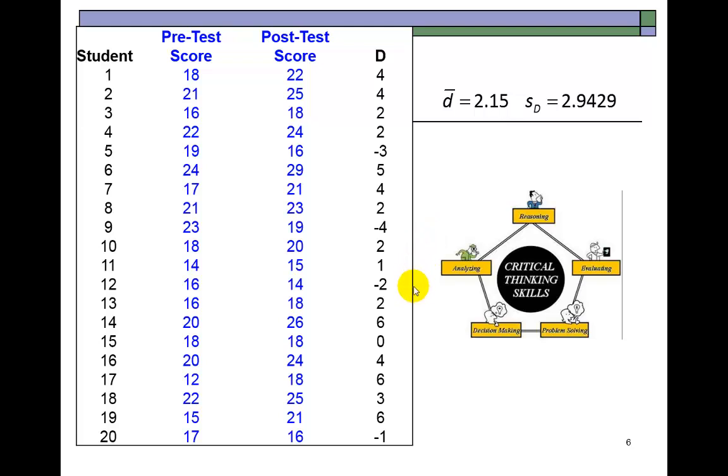If it came out to be negative, then we'll say that things got worse after the fact. If it came out positive, then we'll say it looks like this training program or learning module, whatever the intervention is, it has proven effective. In this case, it came out to be a positive mean, the average difference, 2.15.